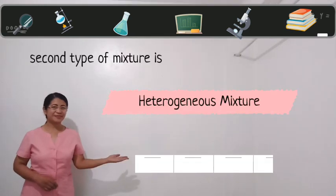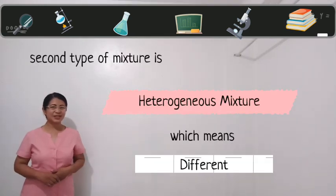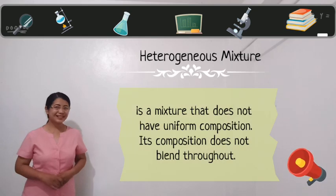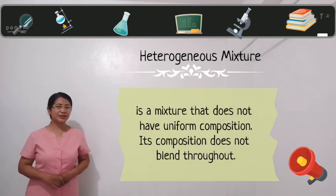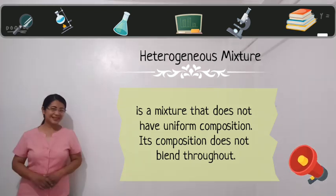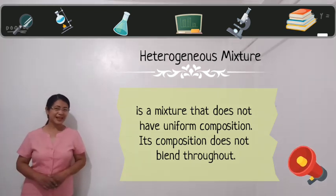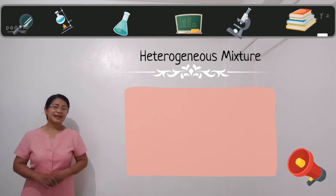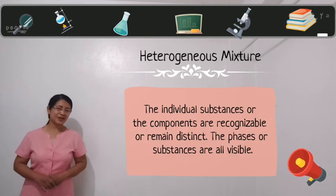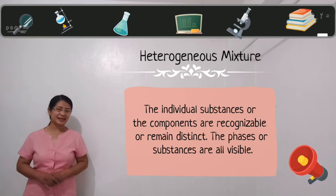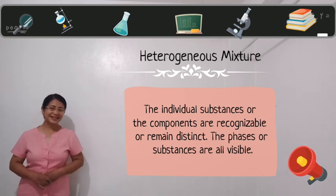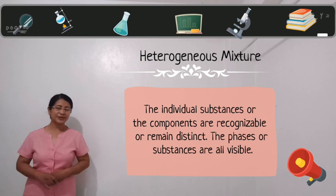The second type of mixture is heterogeneous mixture. Heterogeneous mixture is a mixture that does not have uniform composition. Its composition does not blend throughout. The individual substances or components are recognizable and remain distinct. The phases or substances are all visible.